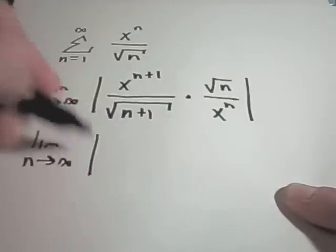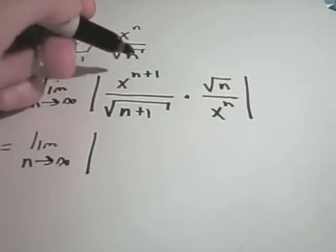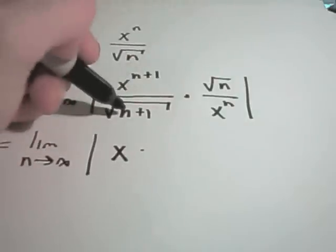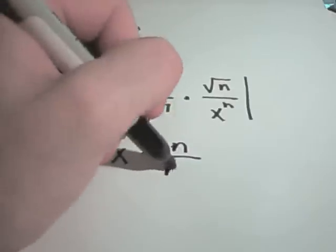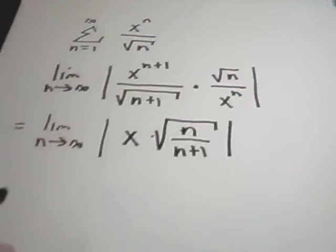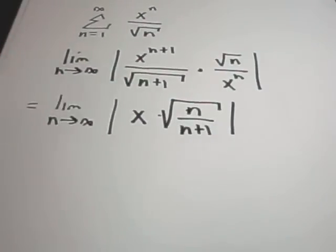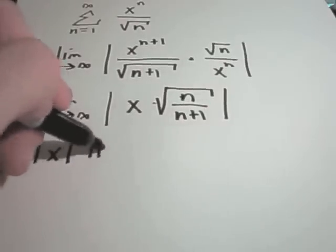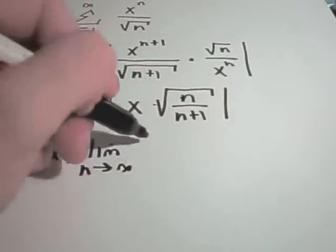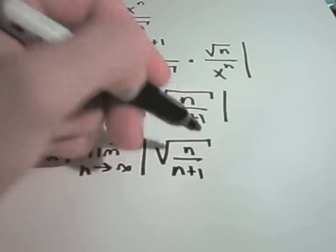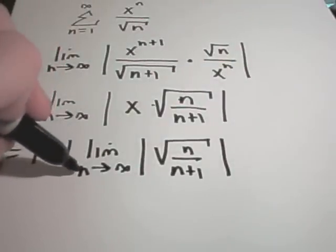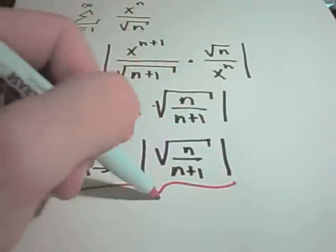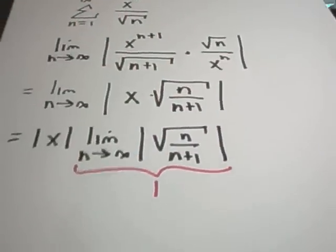Taking the limit as n goes to infinity: x to the n plus 1 on top and x to the n on the bottom leaves x to the first. I can rewrite square root of n over square root of n plus 1 as one fraction all underneath the square root. The limit only depends on n, so I can factor out the absolute value of x. Then I have the limit as n goes to infinity of the square root of n over n plus 1. The limit of n over n plus 1 as n goes to infinity simply equals 1, so all we're left with is the absolute value of x.